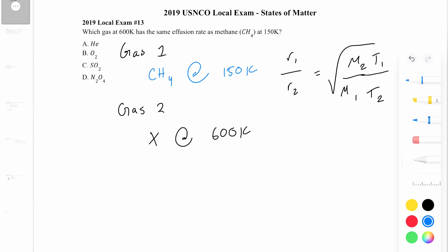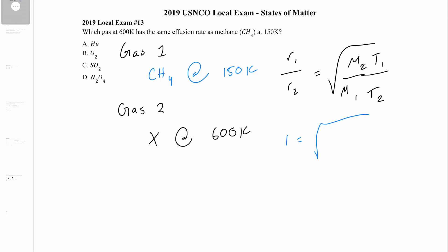Since the rates of effusion are the same, R1 over R2 equals 1. So we set up: the square root of M2 times T1 over M1 times T2 equals 1. T1 is 150 Kelvin, M1 is the molar mass of CH4 which is 16 grams per mol, and T2 is 600 Kelvin.